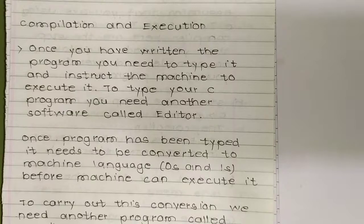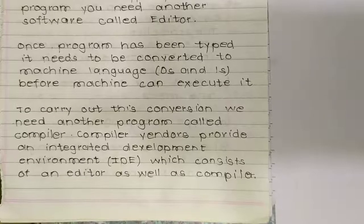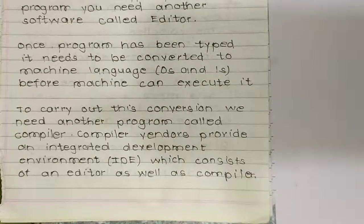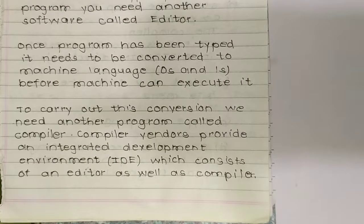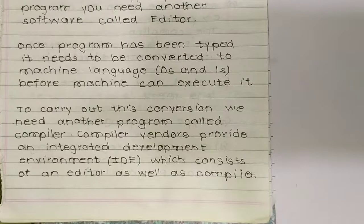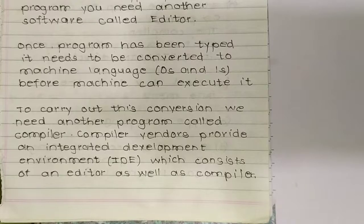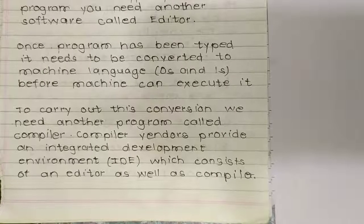A compiler is used to carry out this conversion. Compiler vendors provide an Integrated Development Environment (IDE), which consists of an editor as well as a compiler. For example, for the 8051 microcontroller, there is an IDE called Keil µVision. An IDE contains all the necessary tools: a compiler, an editor for typing the program, and a runner to execute it.